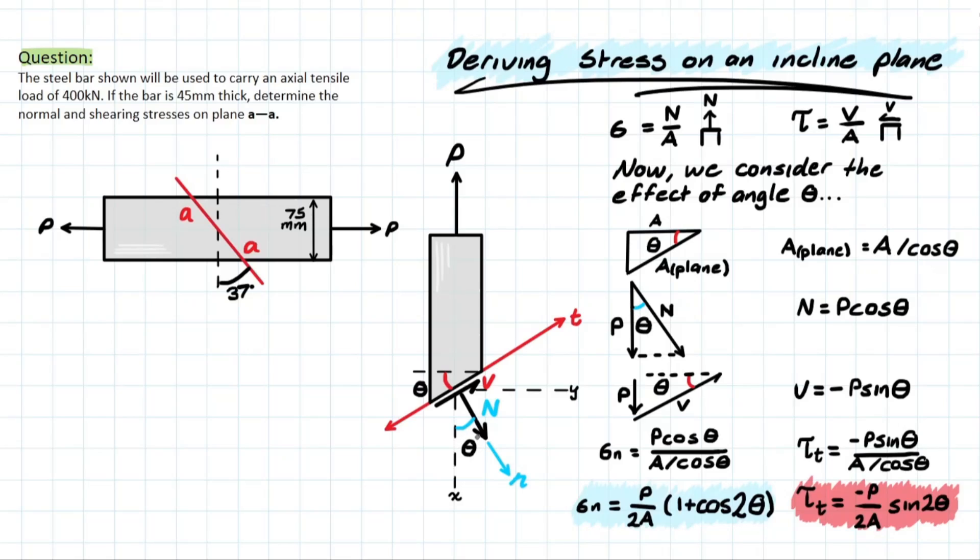Now looking down here, if we imagine that this P-force is reacting on the opposite end where this section is taken, we have that angle theta, and can use that in turn using cos again to determine that N value, which is the force perpendicular to that angled plane. So N is going to be P cos theta.